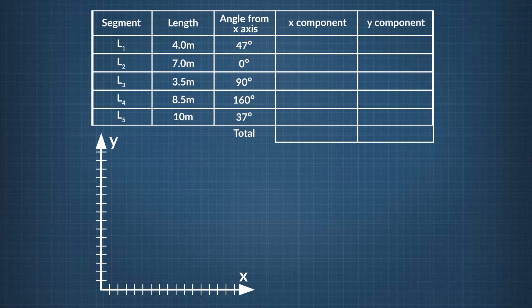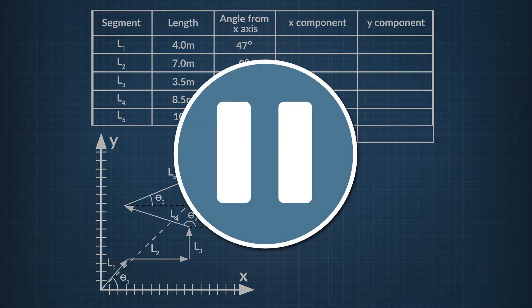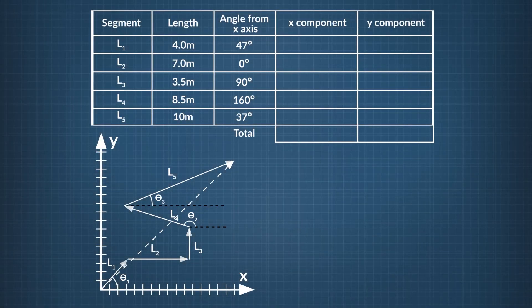Let's try one more example. While napping in your backyard hammock, your dog Fido picks up your sunglasses and runs off. Traveling in five different directions is shown before dropping the sunglasses and wandering off. Take a minute, press pause, and see what answer you come up with. Did you find that the shortest distance is 16 meters at an angle of 58 degrees? If not, let's take a look at it together.